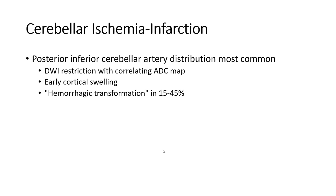The first differential analysis is cerebral ischemia/infarction. The most common distribution is the posterior inferior cerebral artery territory. On DWI, there is restricted diffusion with corresponding ADC low signal. Early cortical swelling is seen, with hemorrhagic transformation occurring in 15–45% of cases.